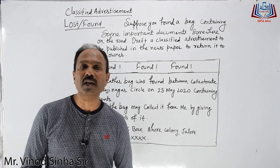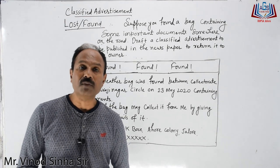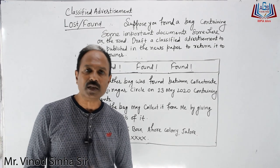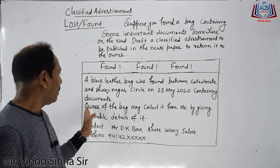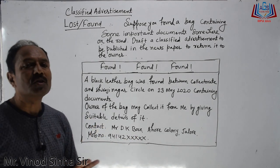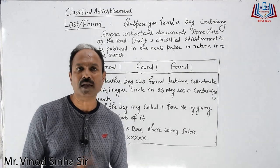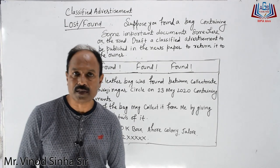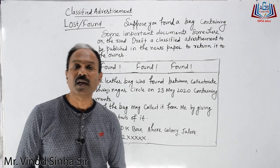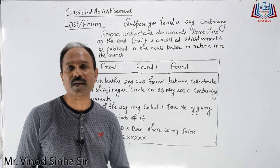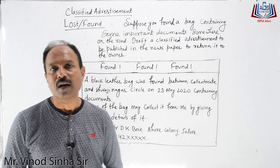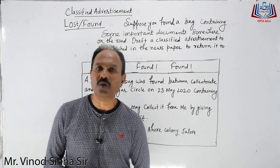The standard practice is that we don't reveal exactly what was found. Instead, we ask the claimant to tell us what was in the bag. We write in the advertisement: 'Owner of the bag may collect it from me by giving suitable details of it.' This way, only the true owner — who knows the exact contents — can successfully claim the item.